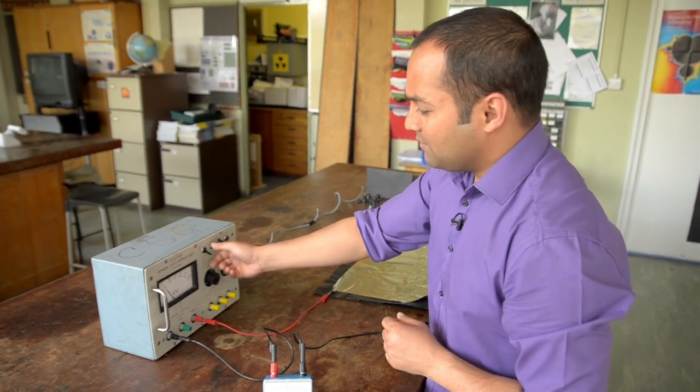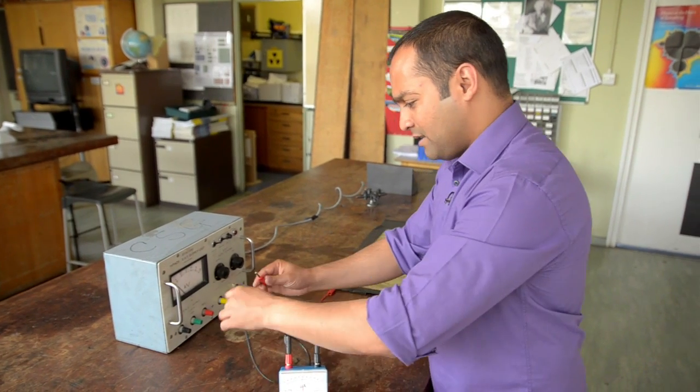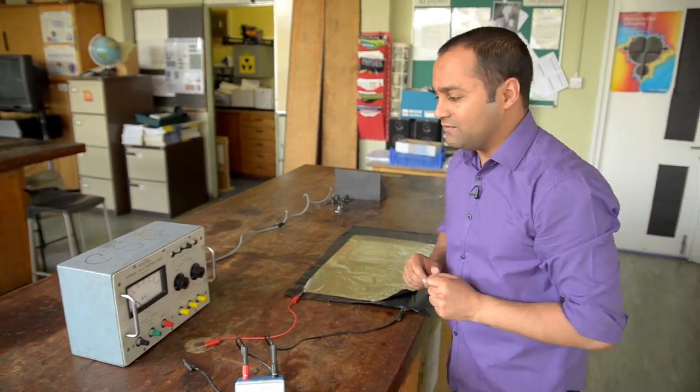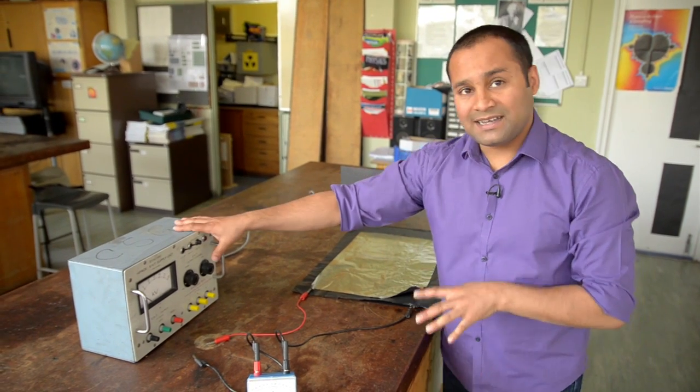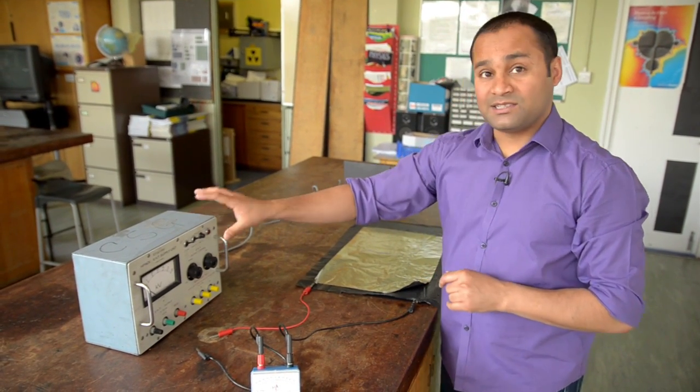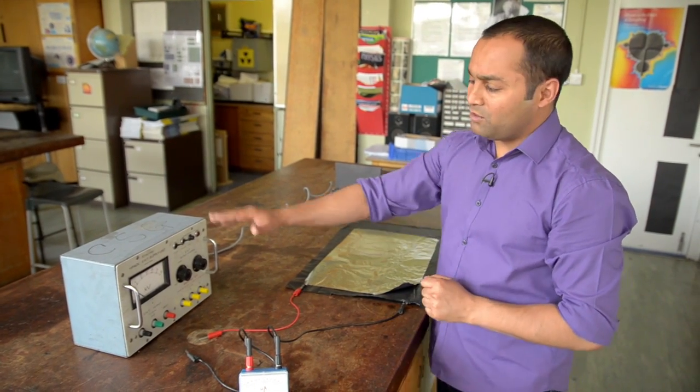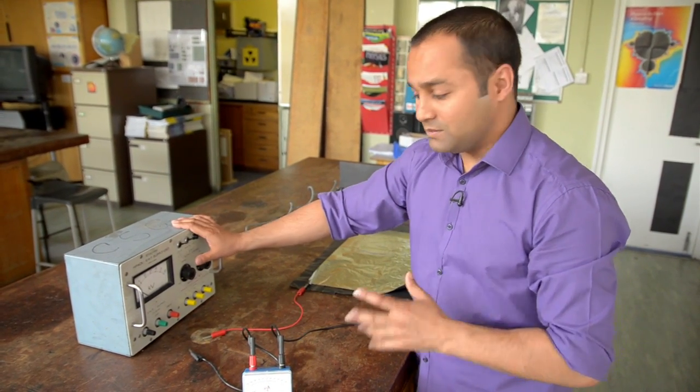I'm just going to turn the power off and discharge by completing the circuit, and give you a quick note about safety. When the capacitor's connected to the power supply and it's turned on, you mustn't touch any exposed bits of metal. However, when the power supply is off, it's perfectly safe.